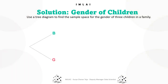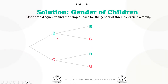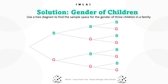We start with B and G — one boy, one girl — as the first level. Because we want three-level combinations, from there we go to the second level, where again you can have B or G. So we branch: boy-boy or boy-girl, and similarly from girl.